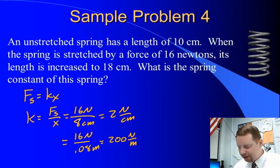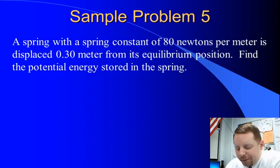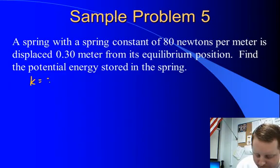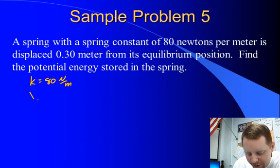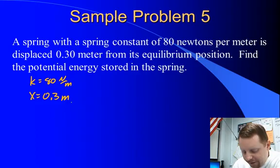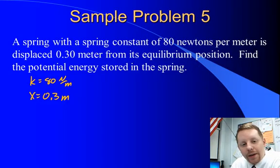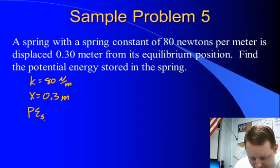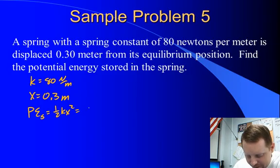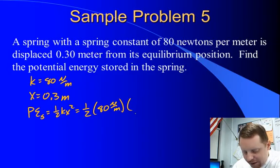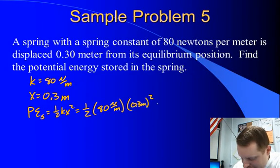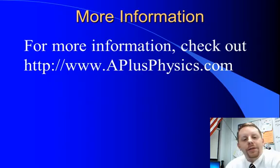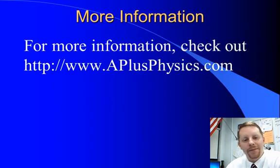Let's try one more. A spring with a spring constant of 80 newtons per meter is displaced 0.3 meters from its equilibrium position. Find the potential energy stored in the spring. Going straight to our formula: PE equals one-half kx squared — one-half times 80 newtons per meter times 0.3 meters squared — for a total of 3.6 joules of energy stored in the spring. Hope this was helpful for learning about springs. For more questions, check out aplusphysics.com. Thanks and make it a great day!